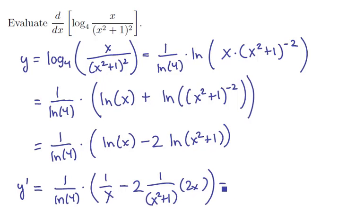So now all we need to do is clean this up. We have that 1 over ln of 4 still factored out in front times 1 over x minus 2 and a 2, so that would be a 4x on the top divided by x squared plus 1 on the bottom. And so there's our derivative.